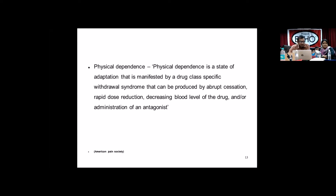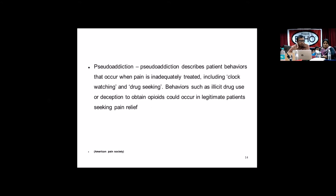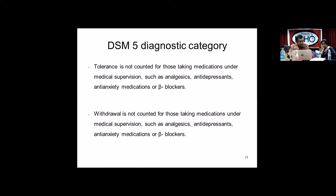Physical dependence is a state of adaptation manifested by a drug class-specific withdrawal syndrome produced by abrupt cessation, rapid dose reduction, decreasing blood levels, or administration of an antagonist. Pseudo-addiction describes patient behaviors that occur when pain is inadequately treated, including clock-watching and drug-seeking. The DSM-5 clearly notes that tolerance and withdrawal are not counted for those taking medications under medical supervision such as analgesics, antidepressants, anti-anxiety medications, or beta blockers.